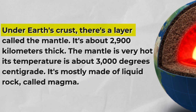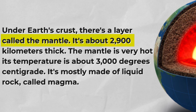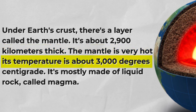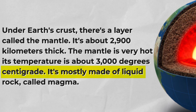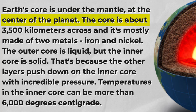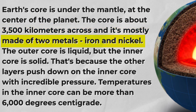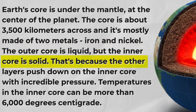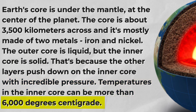Under Earth's crust, there's a layer called the mantle. It's about 2,900 kilometers thick. The mantle is very hot. Its temperature is about 3,000 degrees centigrade. It's mostly made of liquid rock, called magma. Earth's core is under the mantle, at the center of the planet. The core is about 3,500 kilometers across, and it's mostly made of two metals: iron and nickel. The outer core is liquid, but the inner core is solid. That's because the other layers push down on the inner core with incredible pressure. Temperatures in the inner core can be more than 6,000 degrees centigrade.